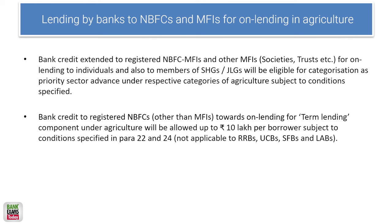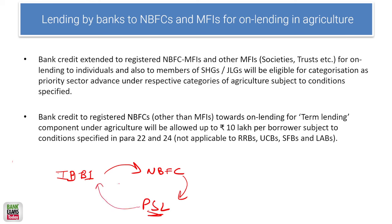Lending by banks to NBFCs for on-lending: if a bank like IDBI gives a loan to an NBFC such as Shriram Finance, and that NBFC then gives a priority sector loan, it is counted towards the bank's PSL target — subject to certain limits. For agriculture, bank credit to registered NBFCs towards on-lending for the term lending component is allowed up to 10 lakh rupees per borrower, and it would be considered towards priority sector lending.